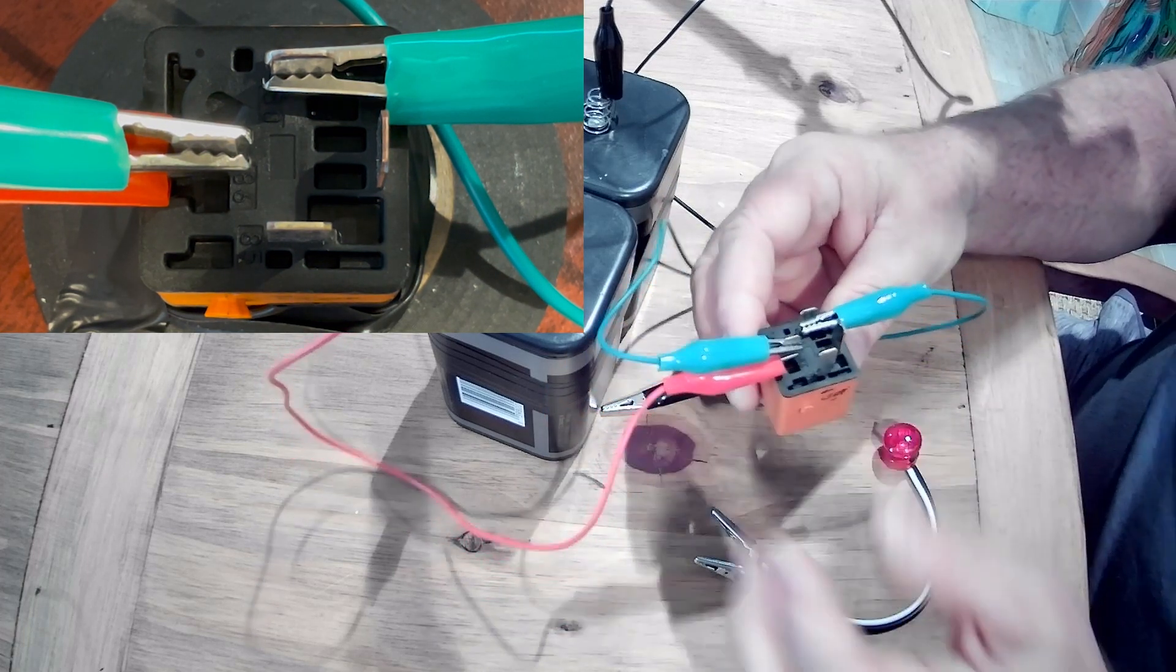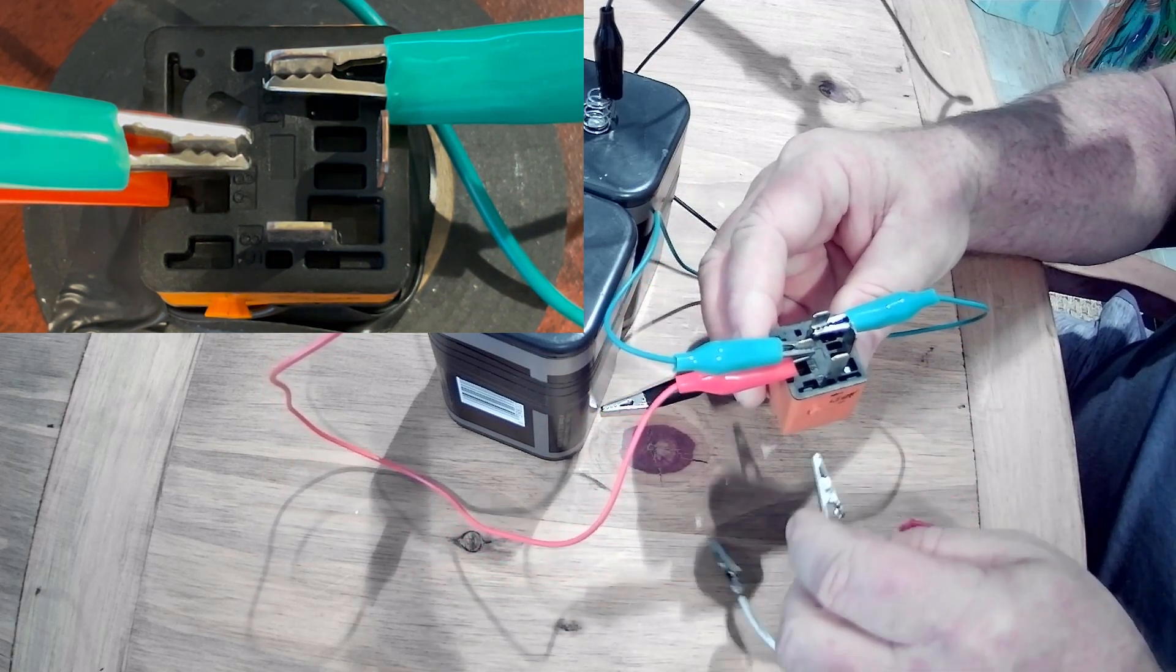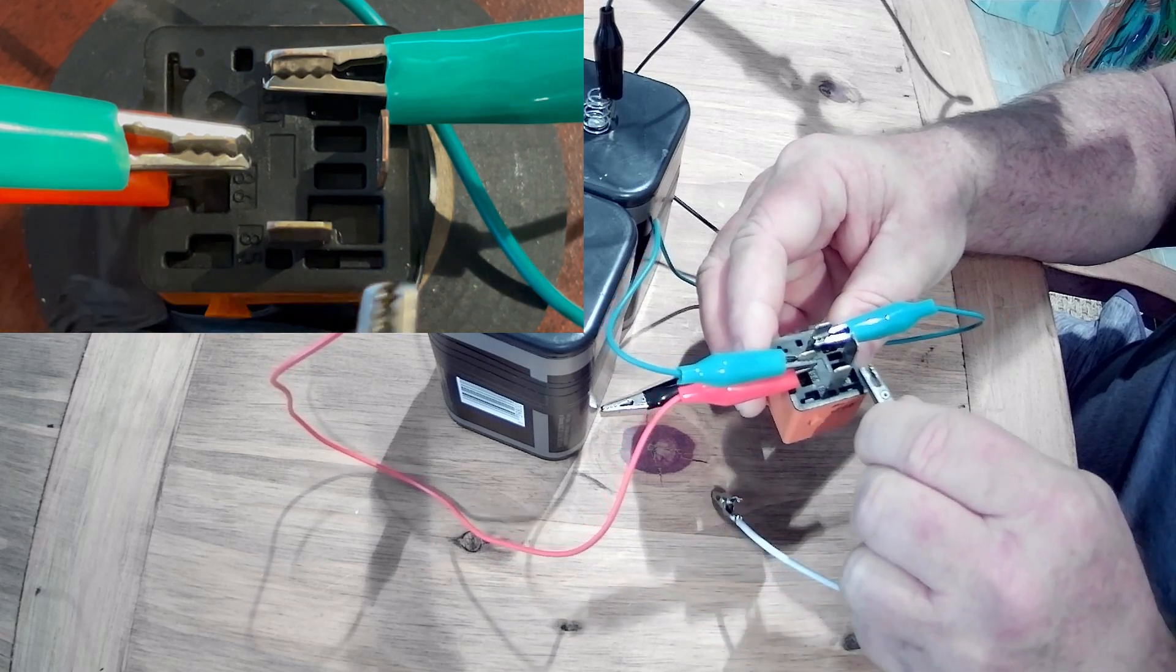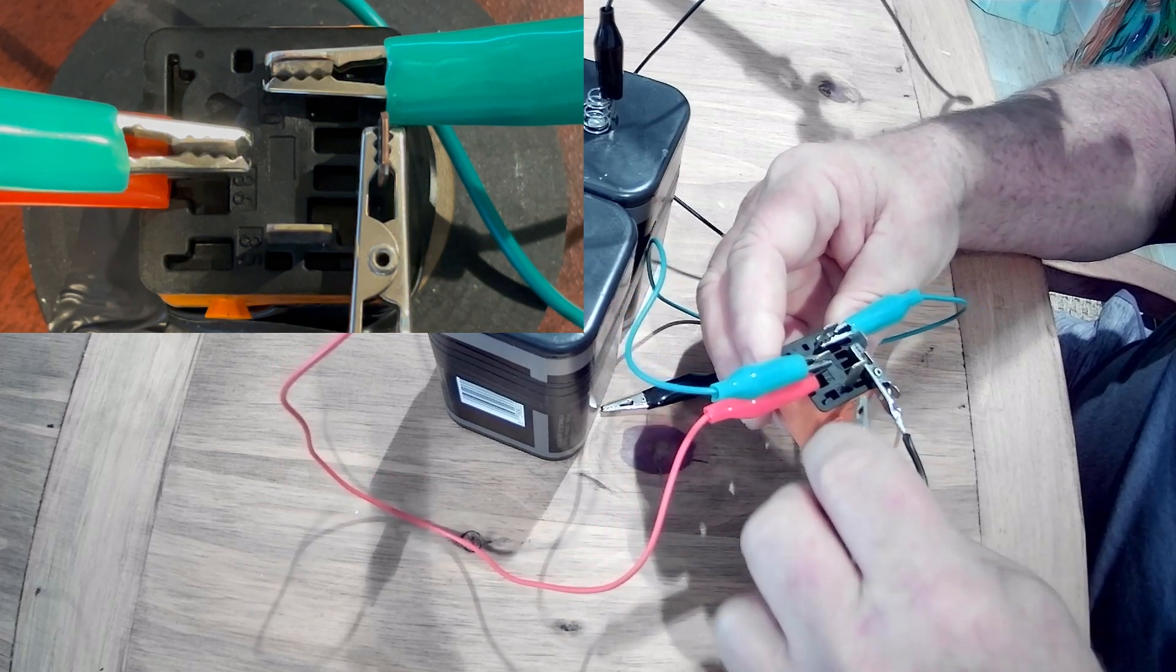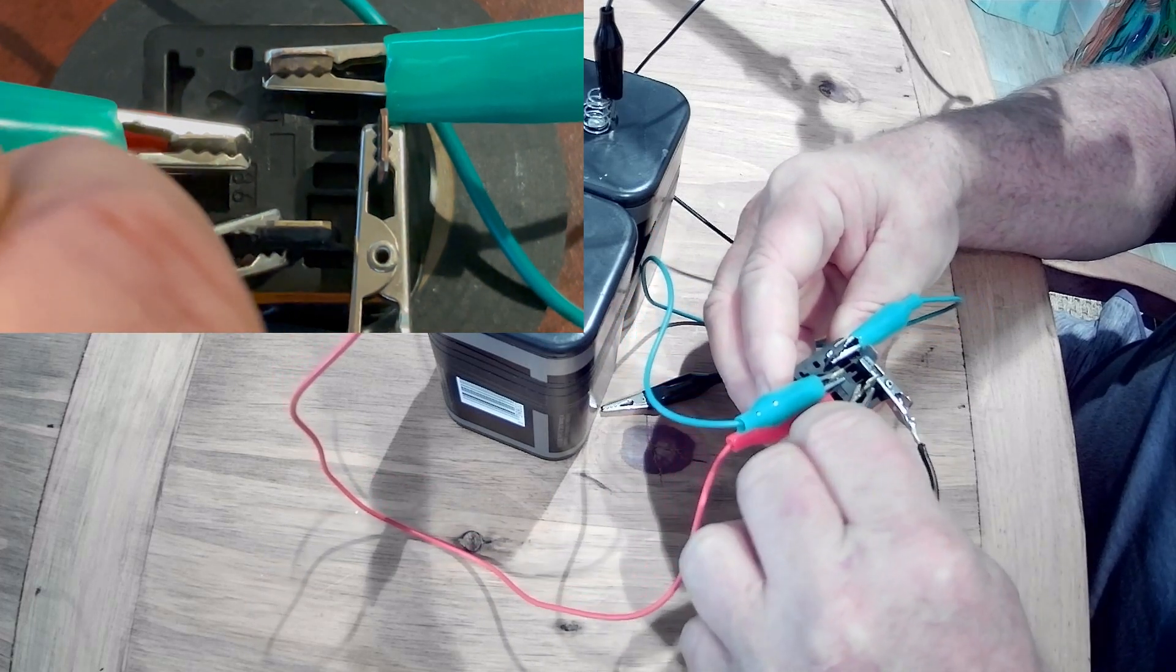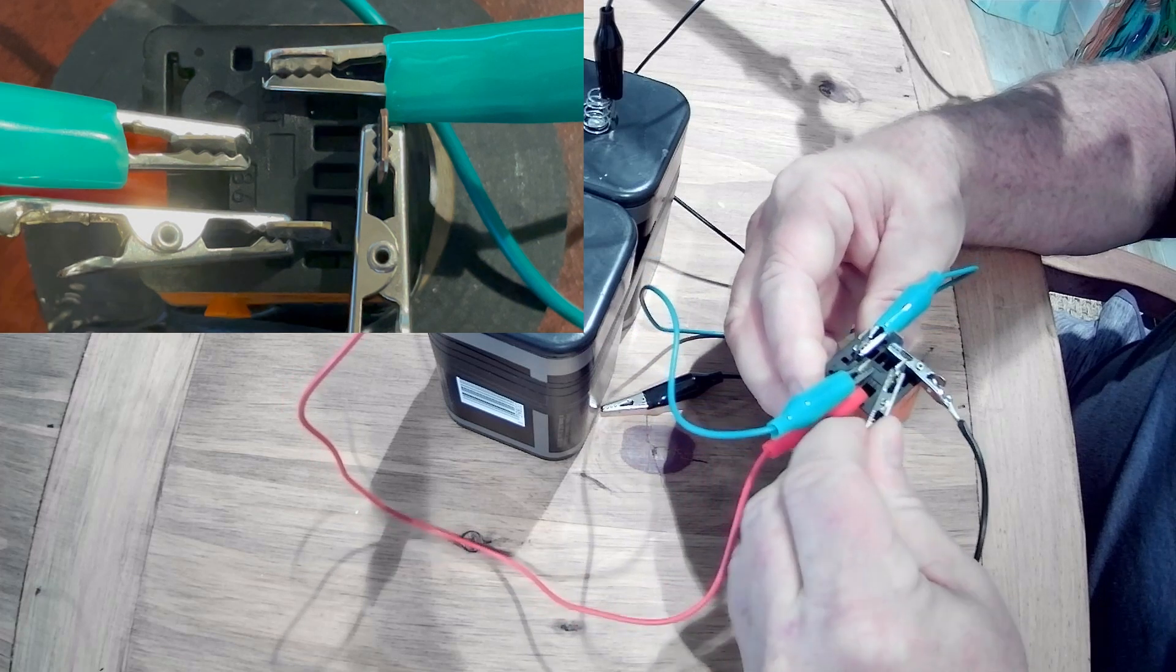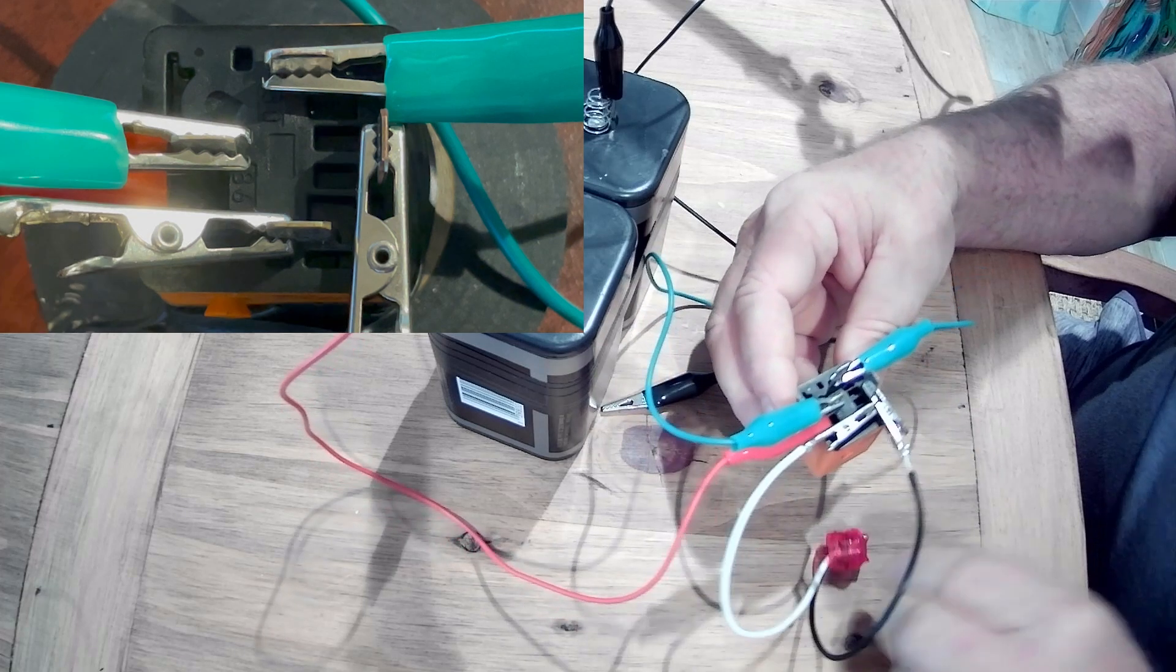And the next thing we're going to do is we're going to take our test light and we're going to attach to the other side of the switch and then to the negative terminal like that. And we're all set.